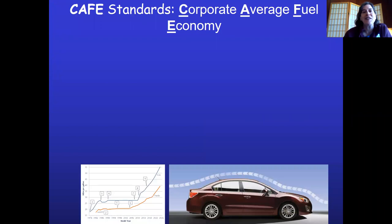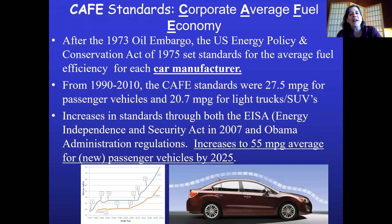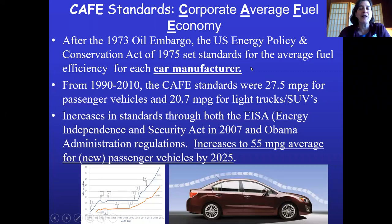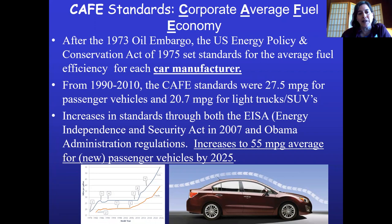Let's talk about CAFE standards — Corporate Average Fuel Economy. After the 1973 oil embargo and major oil shortages, fuel efficiency standards were set up. The standards were 27.5 average miles per gallon for passenger vehicles and only 20.7 for light trucks — and SUVs fall into the light truck category. One reason SUVs were allowed much lower fuel efficiency standards is that technically they're not classified as cars by the government, even though people use them as cars.